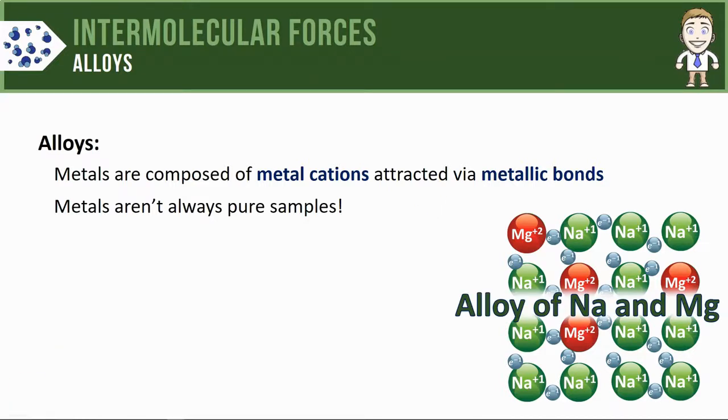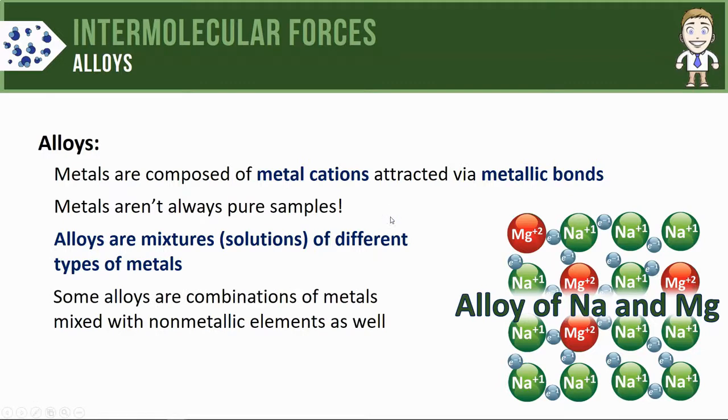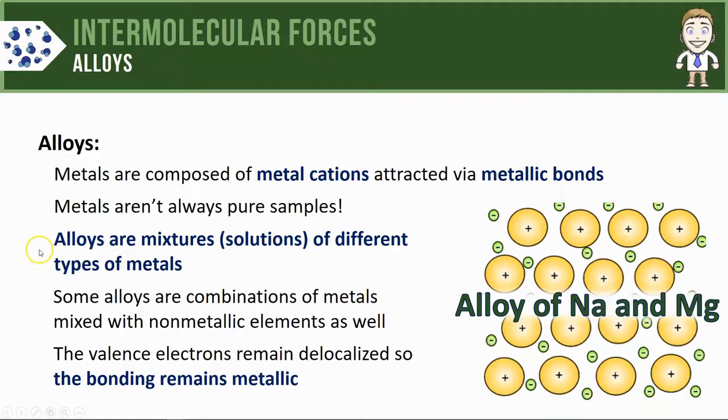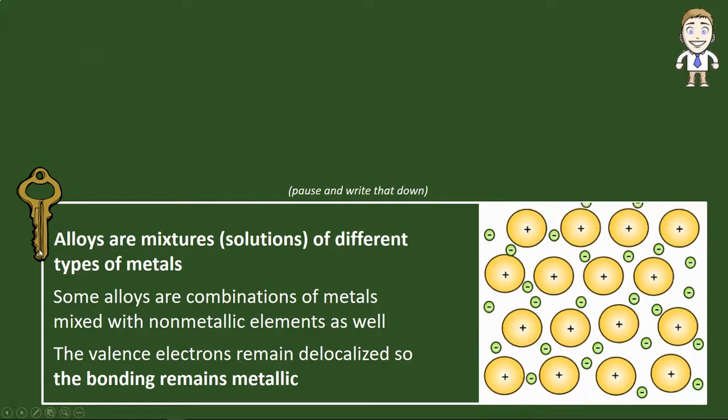This gives us our alloys definition: they are mixtures or solutions of different types of metals. You'll see most alloys are different metals mixed together, but some are also combinations of metals mixed with non-metallic elements. Even if you've got non-metals mixed in, the valence electrons remain delocalized, so the bonding remains metallic.